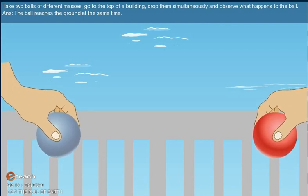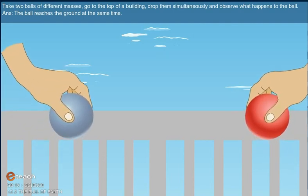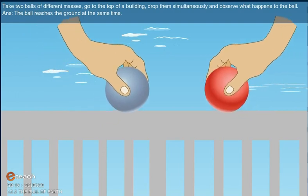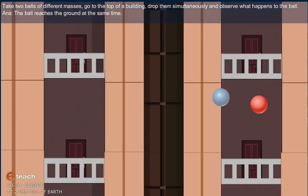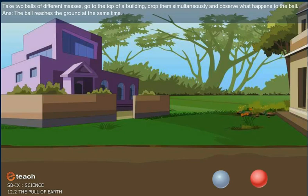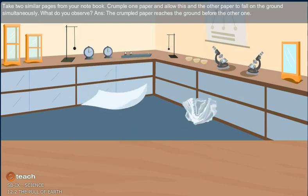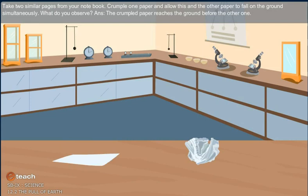Take two balls of different masses. Go to the top of a building. Drop them simultaneously and observe what happens. The balls reach the ground at the same time. Take two similar pages from your notebook. Crumple one paper and allow this and the other paper to fall to the ground simultaneously. The crumpled paper reaches the ground before the other one.